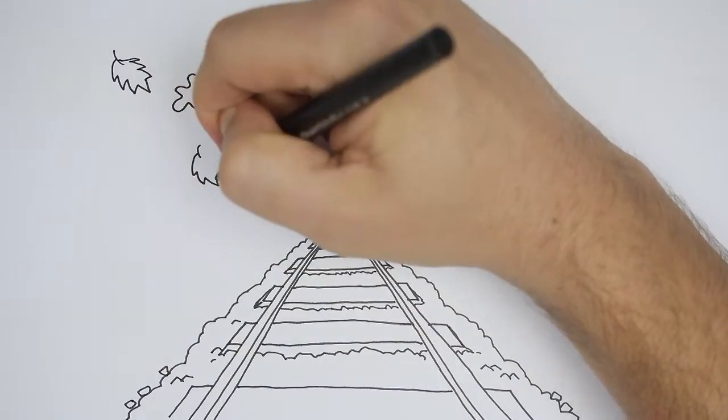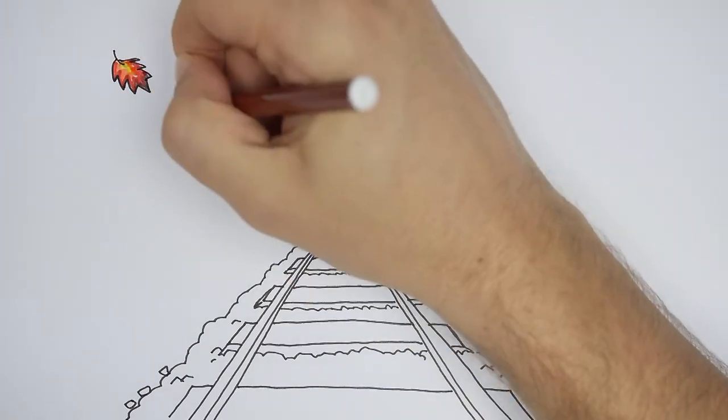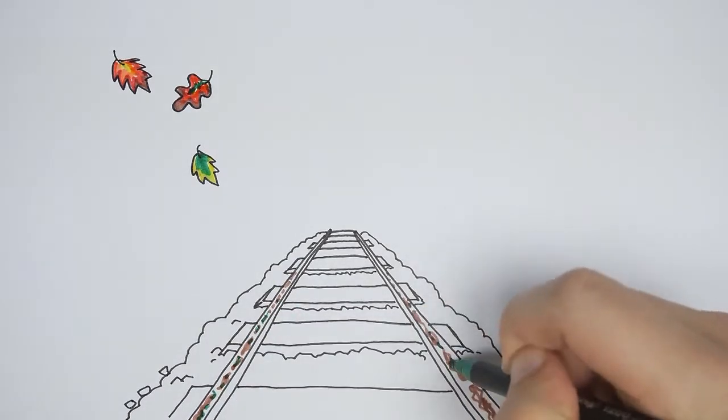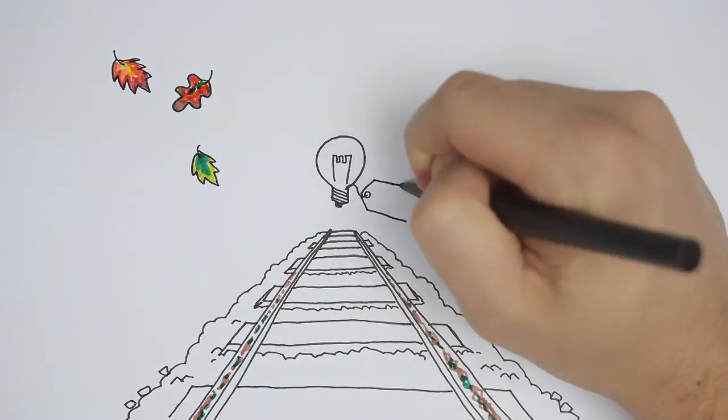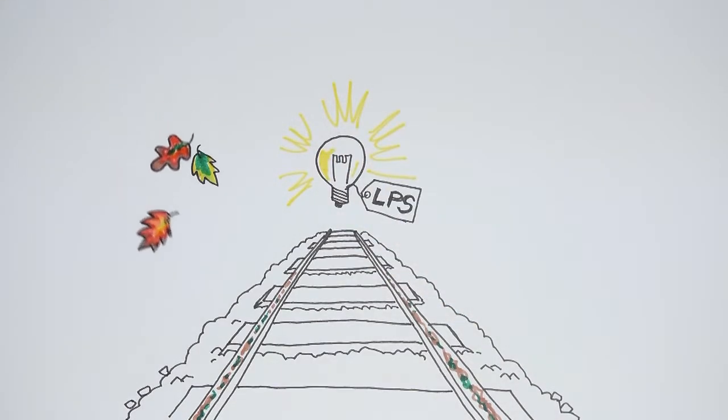In our previous video, we introduced the autumn leaf problem and how the steel-on-steel contact between track and train makes wheels slip easily. Our tribometer is the unique solution that provides better traction for all trains in the network no matter how slippery it gets.